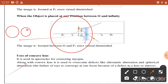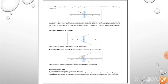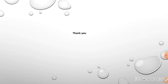Now next हमारे पास में use of concave lens - it is used in spectacles for correcting myopia. ये एक eye disease है, आगे Chapter 11 में हम लोग इसकी study करेंगे. Myopia के correction के अंदर हम concave lens का use करते हैं. ये topics बहुत important हैं - image formation by convex lens and image formation by concave lens - आप बहुत अच्छे तरीके से इनकी study कर लीजिए.